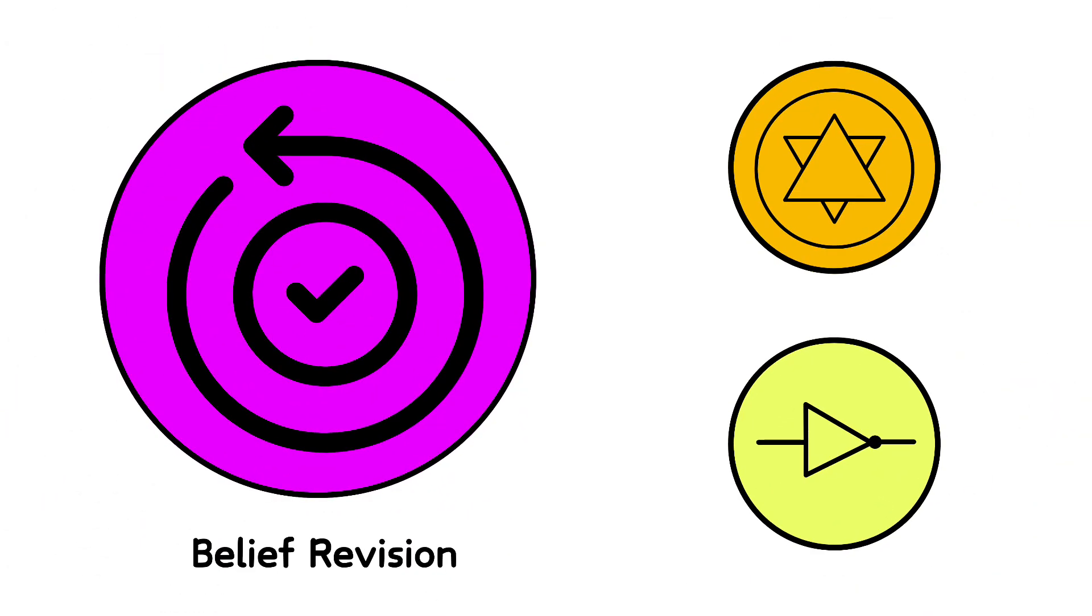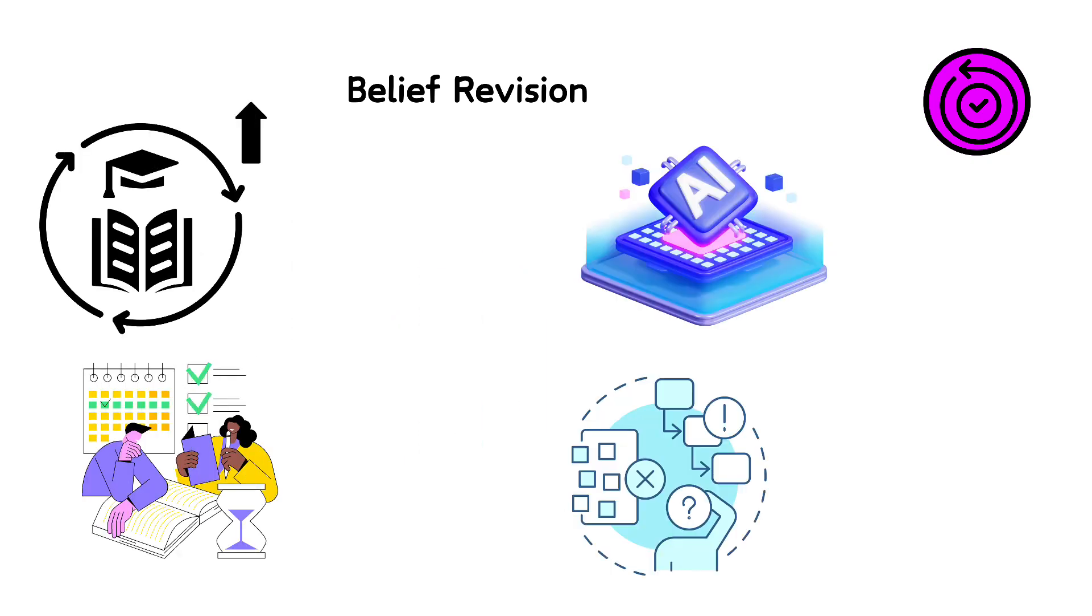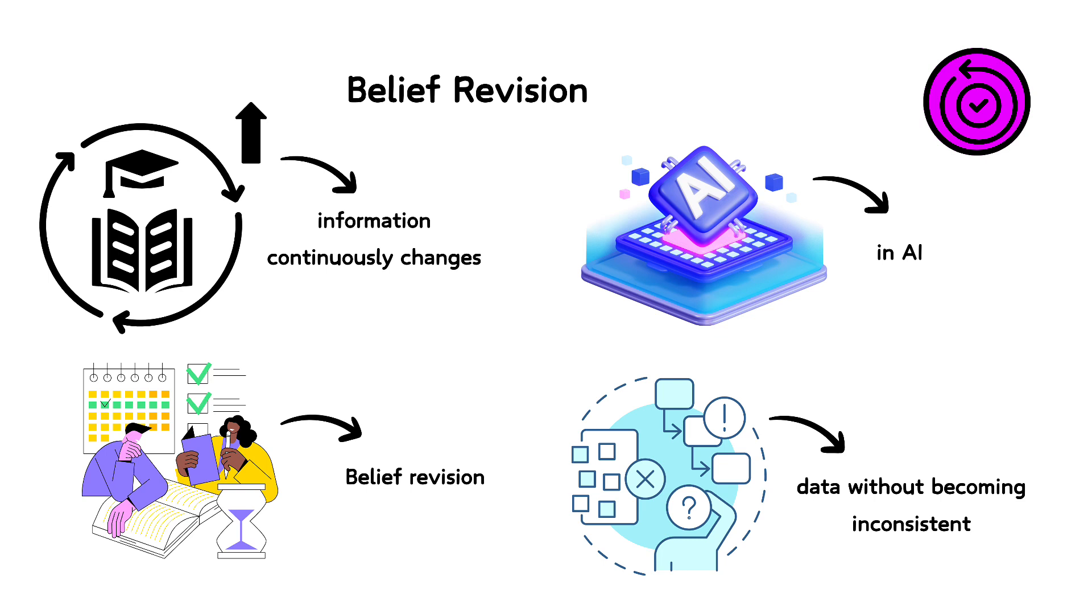Belief revision is the process of changing beliefs logically based on new evidence. This branch of logic deals with how to update a knowledge system in a consistent way when faced with new, possibly contradicting, information. It's crucial in dynamic environments where information continuously changes and decisions must be updated accordingly. Belief revision is particularly relevant in AI, where systems must adapt to new data without becoming inconsistent.